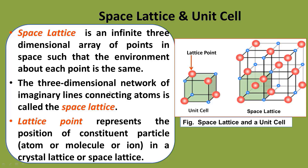Another definition is that the three-dimensional network of imaginary lines connecting atoms is called the space lattice. These are imaginary lines — the atoms are not physically connected by them. The three-dimensional network of imaginary lines connecting all the atoms together is called the space lattice. The lattice point represents the position of a constituent particle — atom, molecule or ion — in a crystal lattice. Each point of the unit cell is called a lattice point.